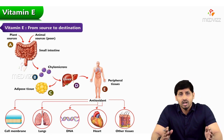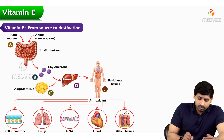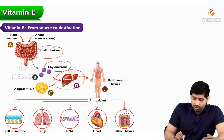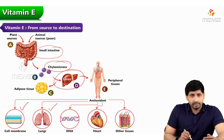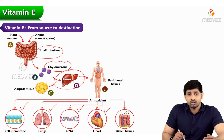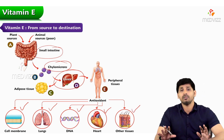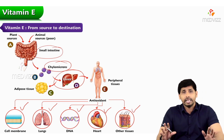Vitamin E from source to destination: from plant and animal sources, via the small intestine and chylomicron, it reaches the liver and then peripheral tissues. Its functions include preventing damage to the cell membrane, preventing lung collapse, preventing DNA damage, preventing atherosclerosis and indirectly heart attacks, and maintaining a healthy epithelium of other cells — so other tissues also remain healthy and normal.